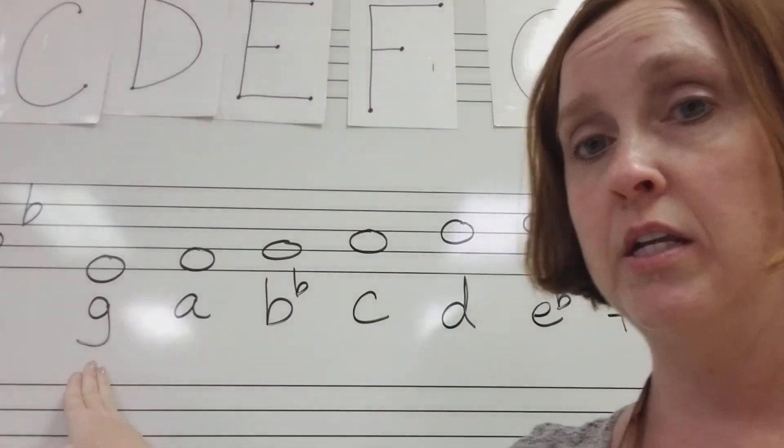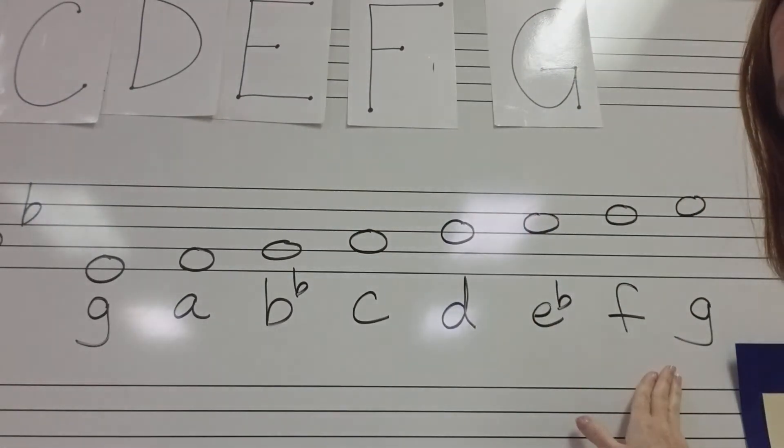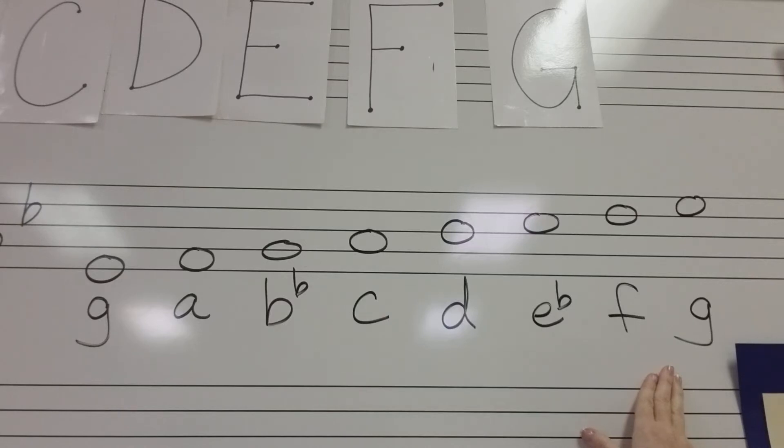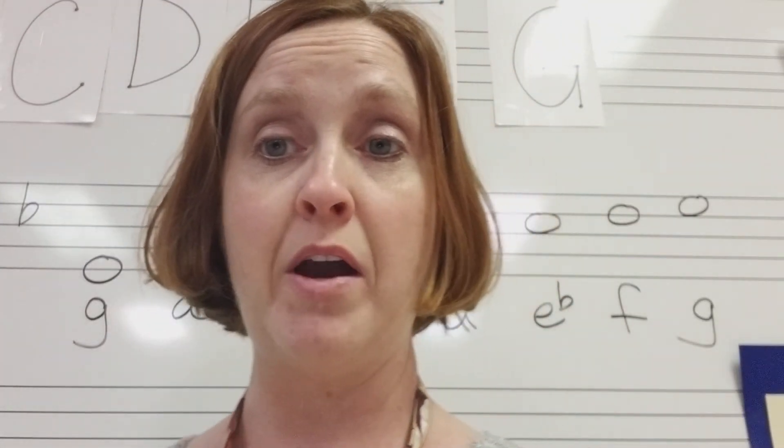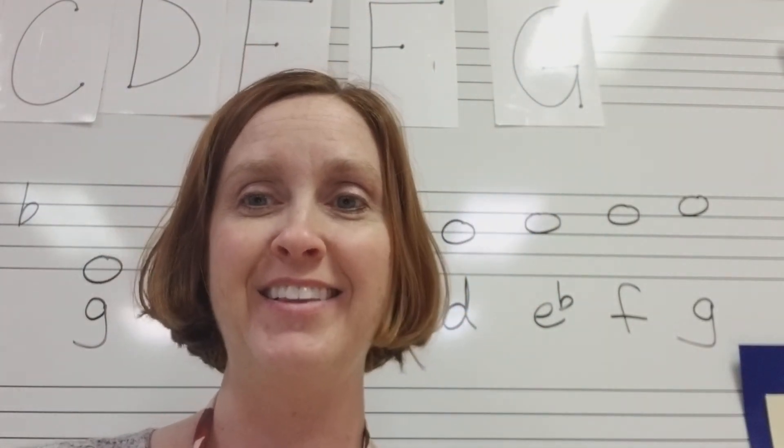I didn't skip any lines or spaces. And I went straight ahead in the musical alphabet. So I didn't skip any letter names. And that's how you draw your concert G minor scale for trombone. Good luck.